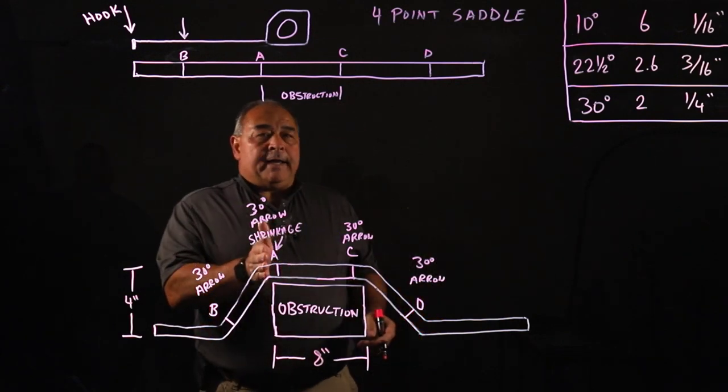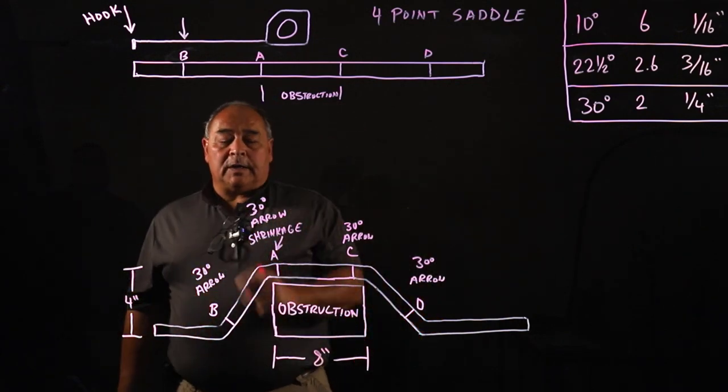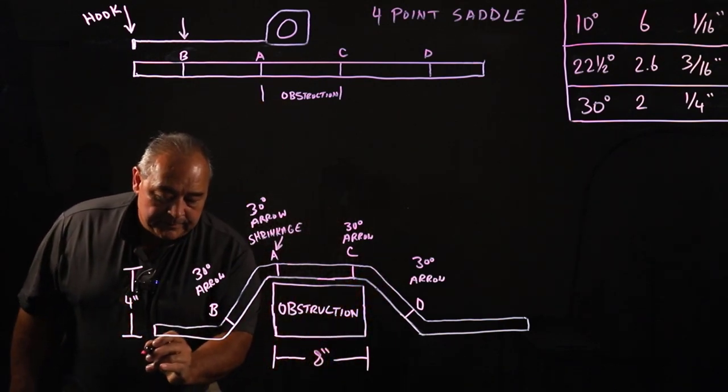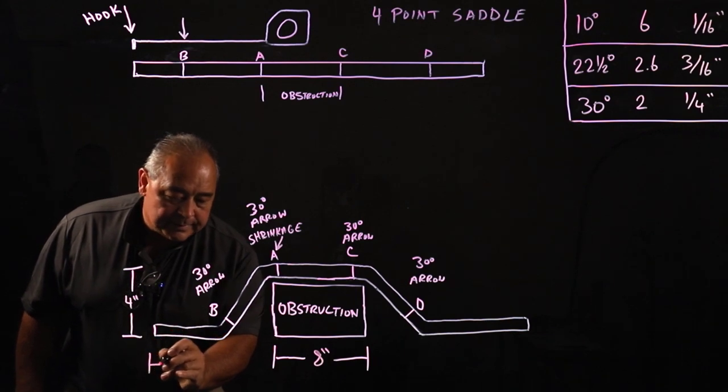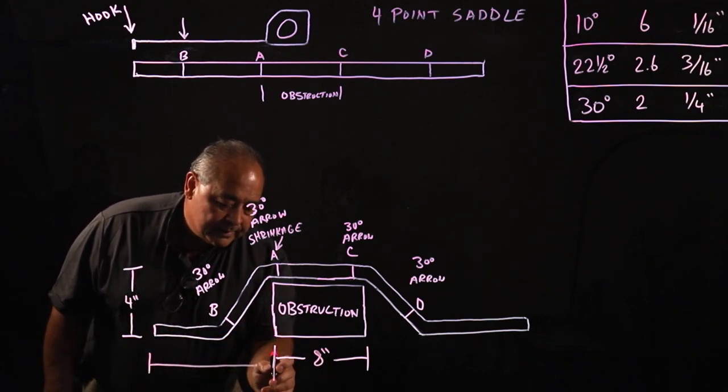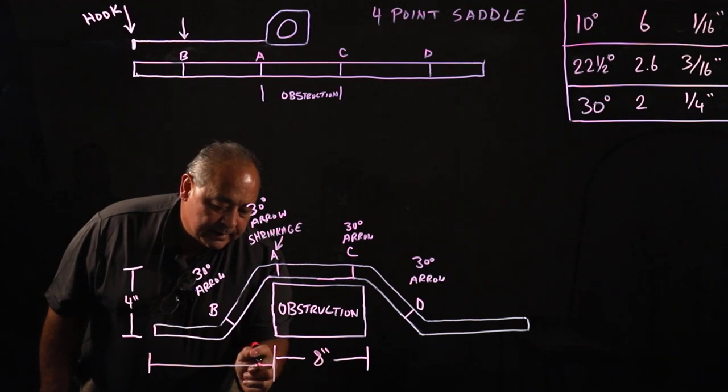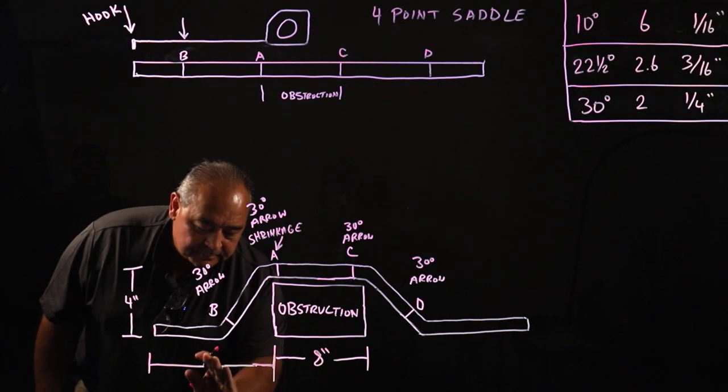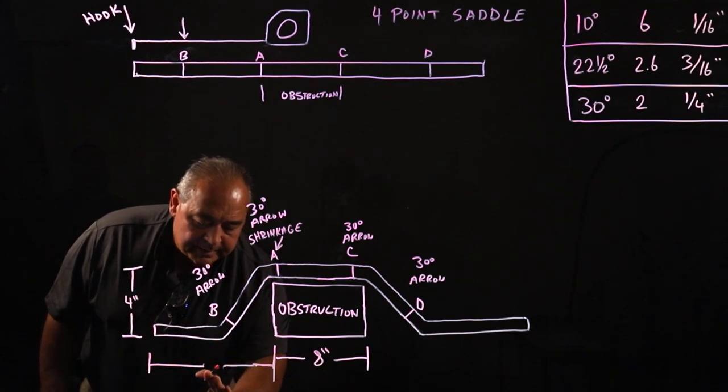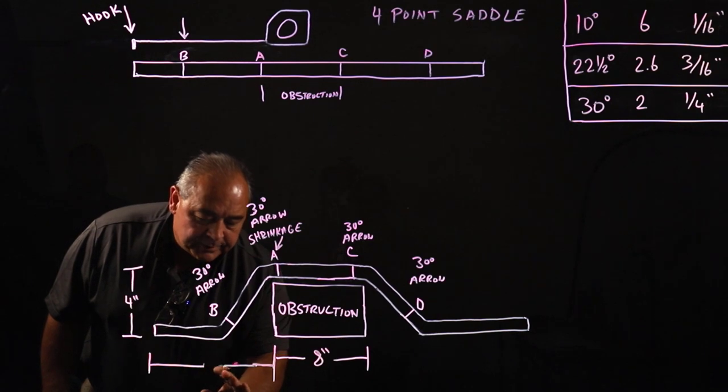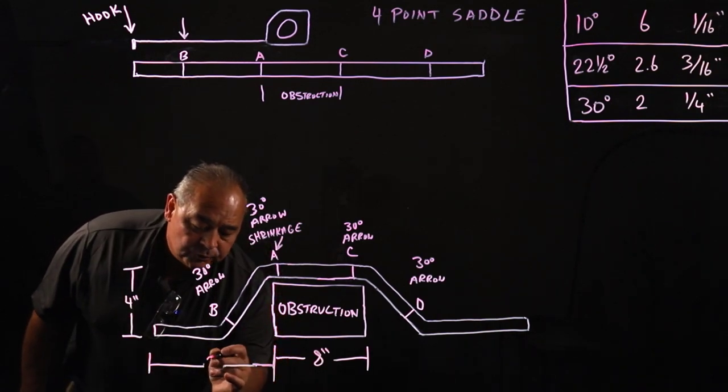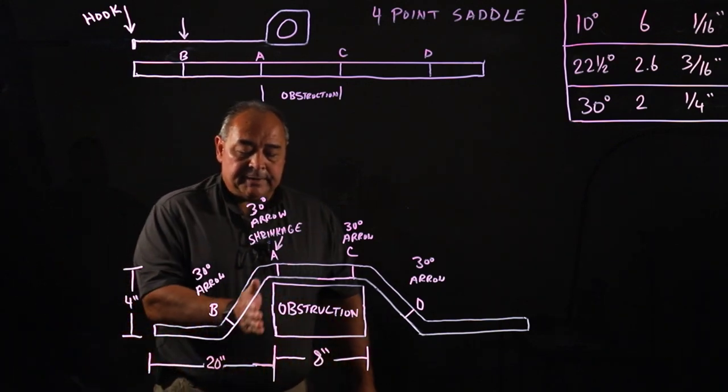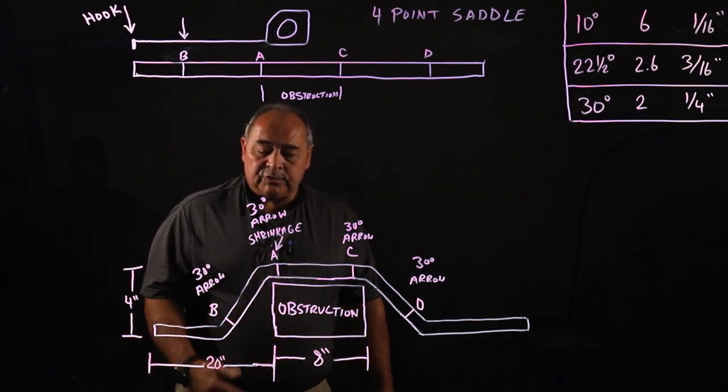So we've got to figure out where A is going to be. A is our first mark on our conduit. Where is A going to be? So if we measure from here where our starting point is to our obstruction, I'll show you a little breakout right here. And let's say that measurement from our starting point to where we run into the obstruction happens to be 20 inches. From where our start point is to where our obstruction is that we're having to navigate over is 20 inches.